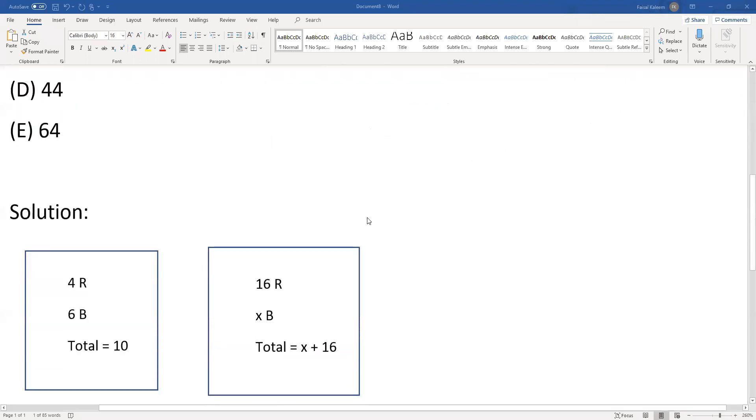So here's the picture. First urn: 4 red, 6 blue, total will be 10. Second urn: 16 red and unknown number of blue, let's say x blues. The total will be x plus 16.